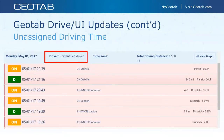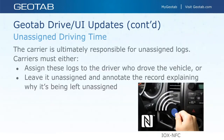Pretty much every single log either needs to be claimed by someone or you have to notate why it's not being claimed. You can view unassigned logs in the database by looking at HOS logs for the relevant time period and selecting 'unidentified driver.' The carrier is ultimately responsible for unassigned logs — carriers must either assign these logs to the driver who drove the vehicle, or leave those logs unassigned and annotate the record explaining why it's being left unassigned. It has to be one or the other.